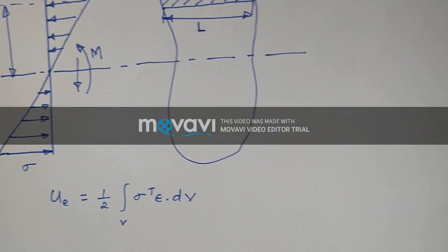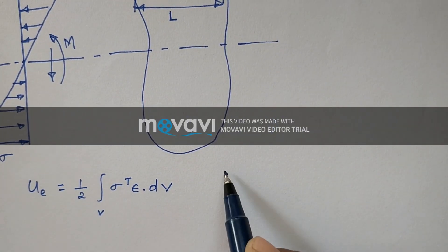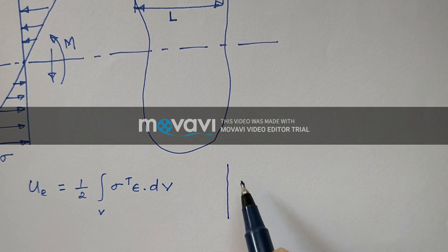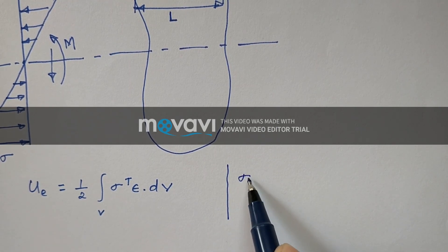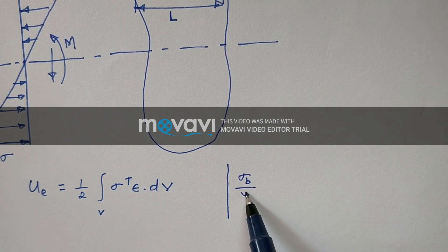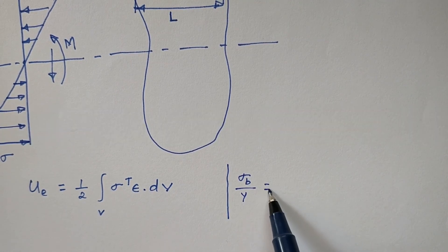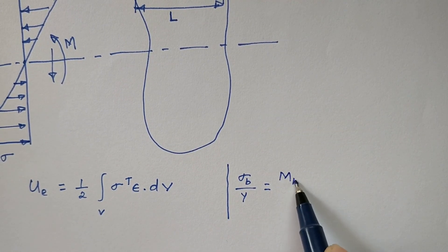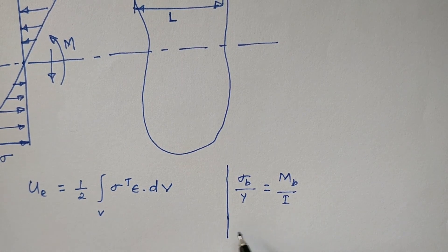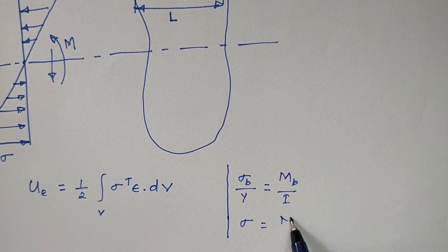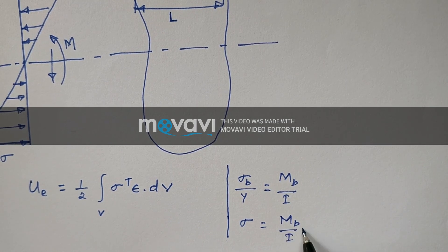Now, as we all know, from the general bending equation, sigma_b divided by y will be equal to m_b divided by i. So from this we can write: sigma is equal to (m_b / i) times y.